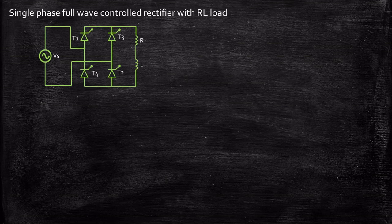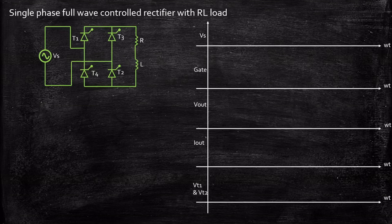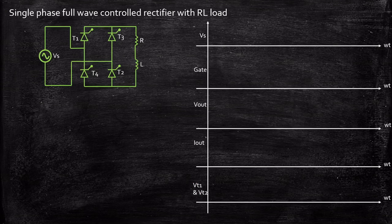This is the circuit diagram. In order to understand the operation of the circuit, let us consider the waveforms and parallely see what happens during different cycles. We are going to look at the supply voltage waveform, the gate pulse, the output voltage Vout, the output current Iout, and the voltage across thyristors T1 and T2.